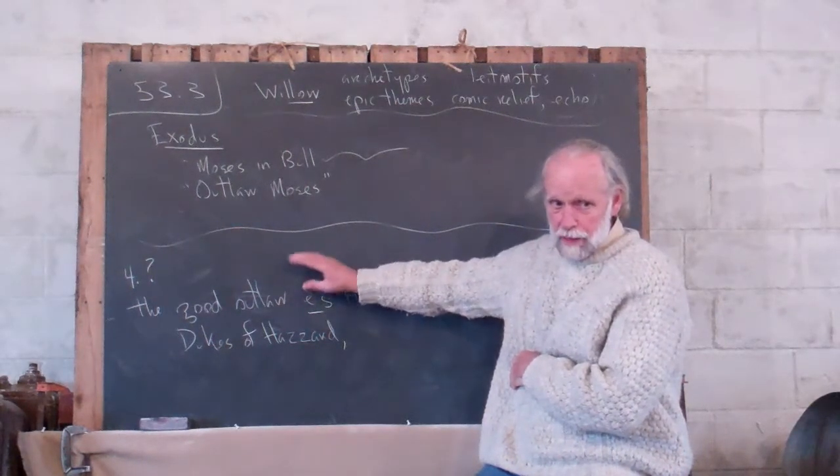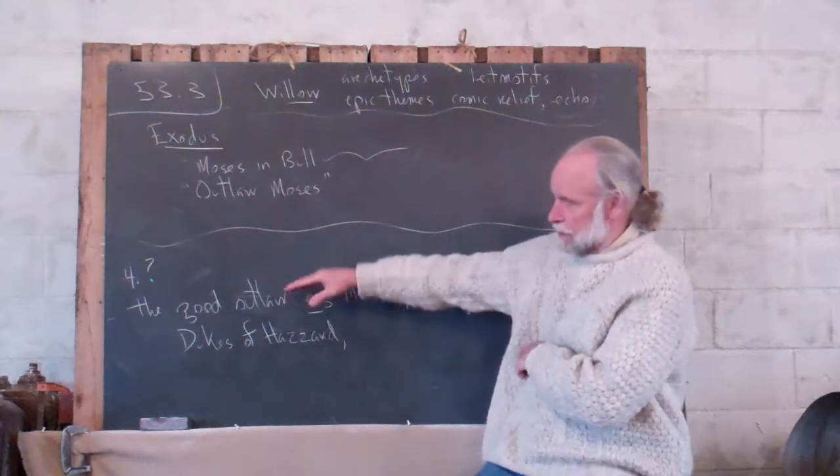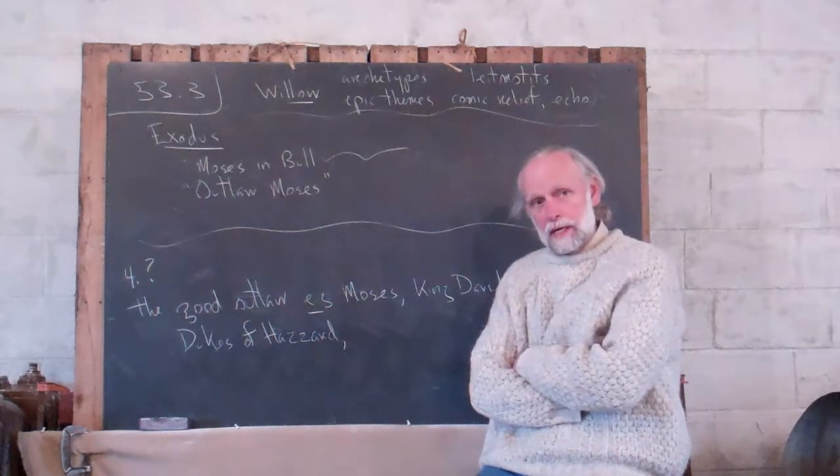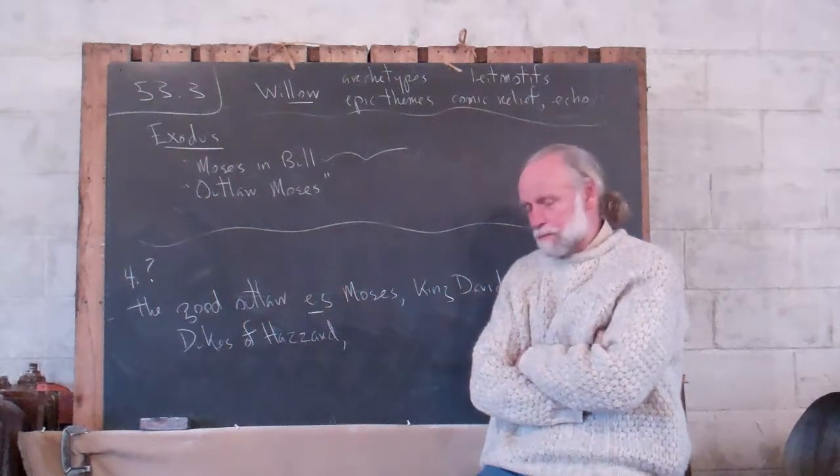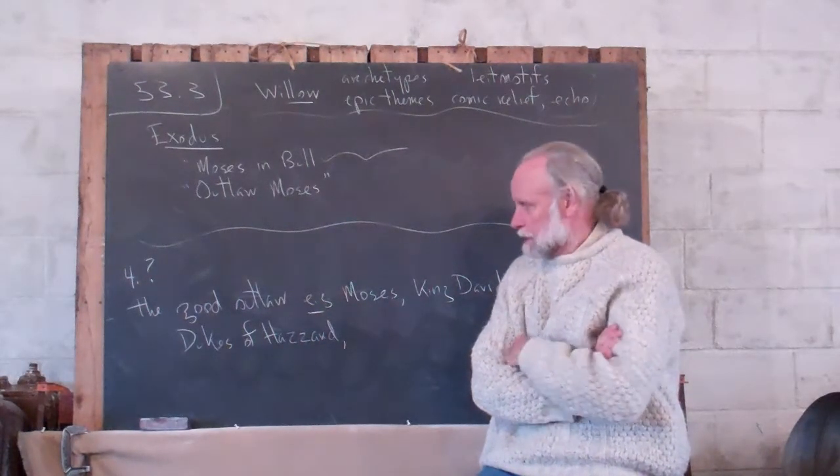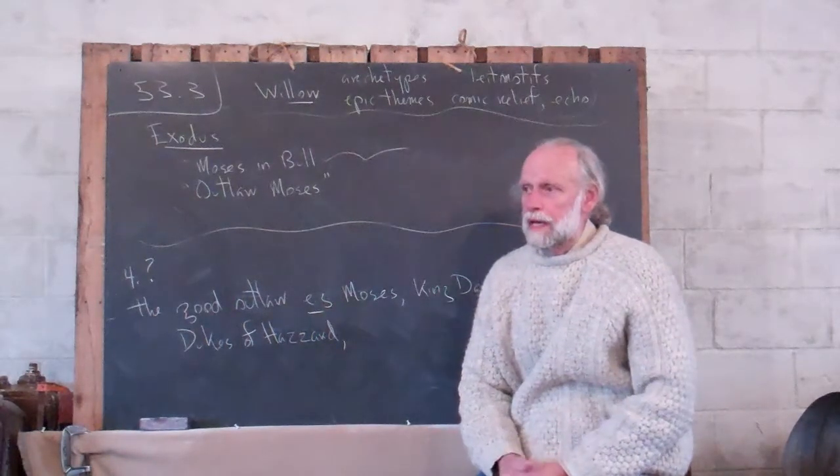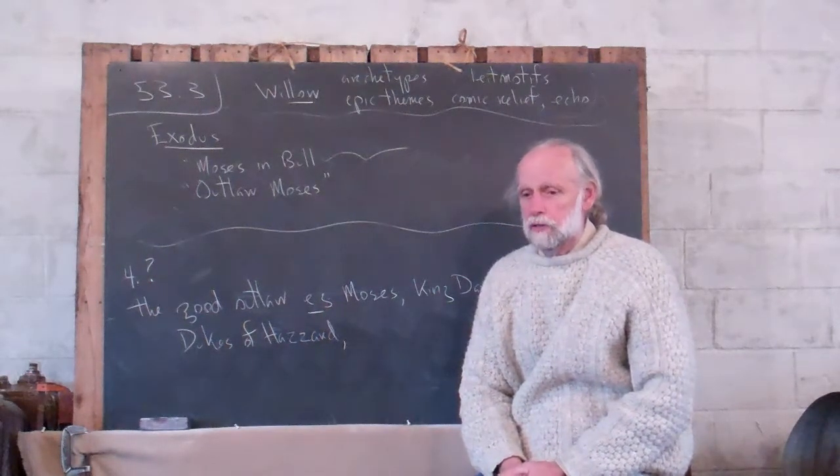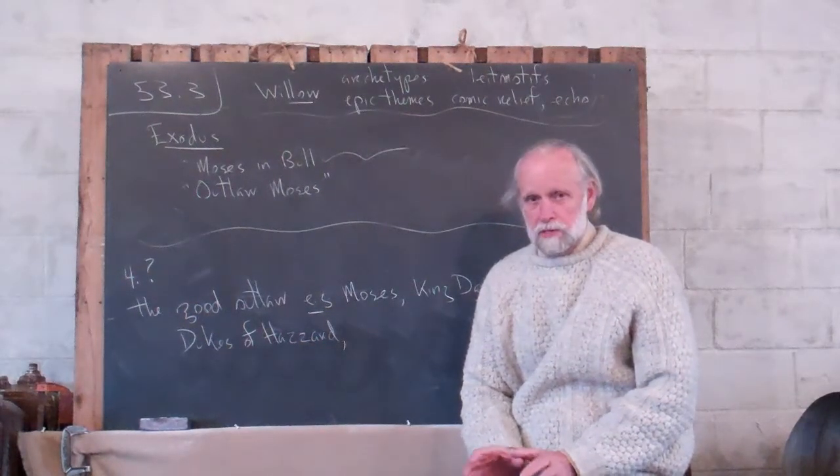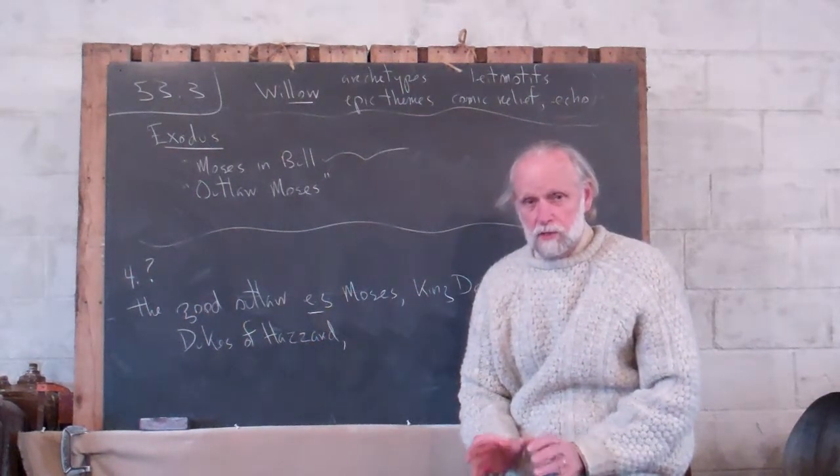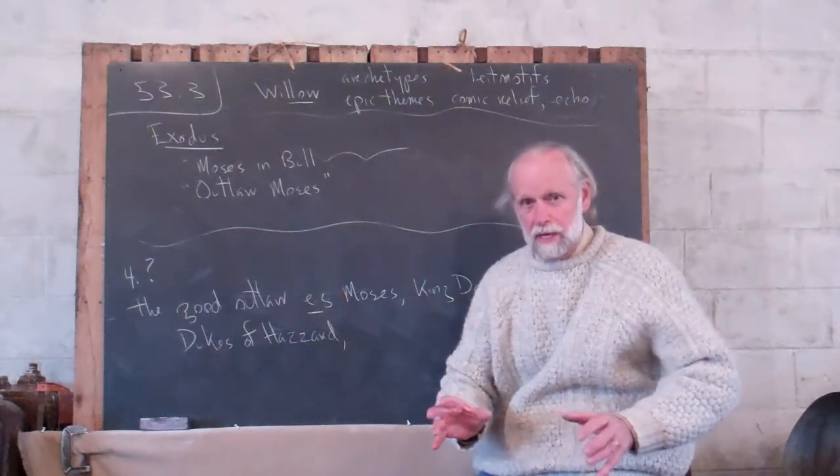And it's always a good idea to skip a line in these lists because we may have other good examples. But anyway, the good outlaw, an archetype is a kind of character that keeps showing up. And typically, the good outlaw is a perfectly good man. It's the law that's bad. And so this good man has to be an outlaw.